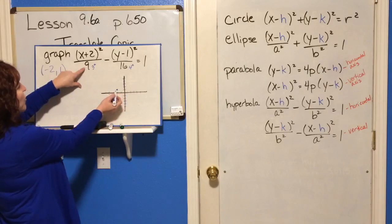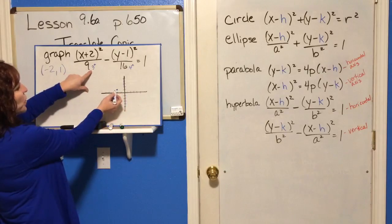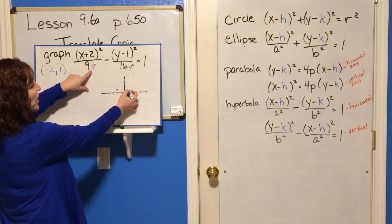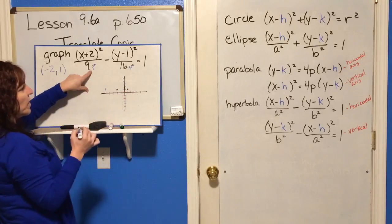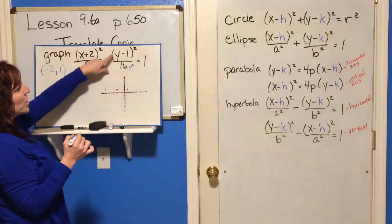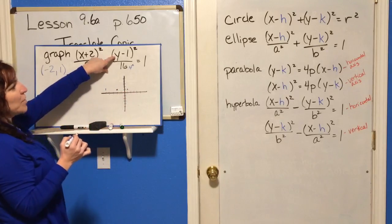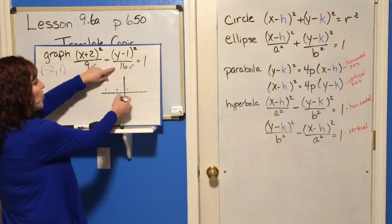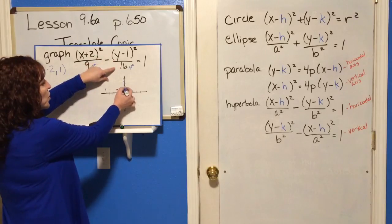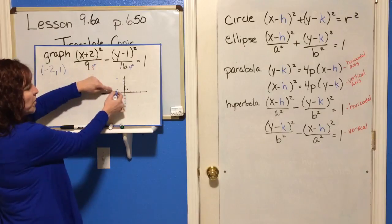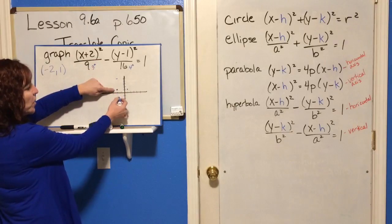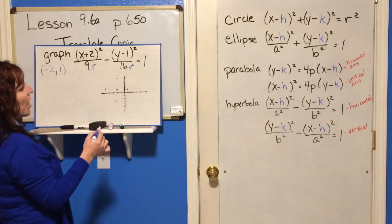From the center of your hyperbola, go three to the right and three to your left, then up and down four — since that's the Y value. So one spot up four from center, and another spot down four from center.